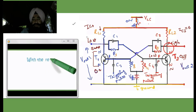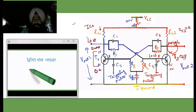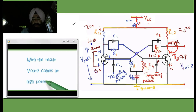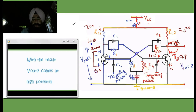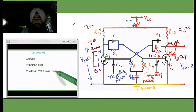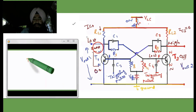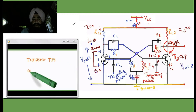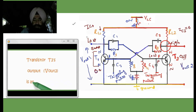Therefore T2 goes to the OFF state and the output goes HIGH — VOUT2 comes at the high potential. Without a triggering pulse, these two states are stable: T1 has a low state output and T2 has a high state output.